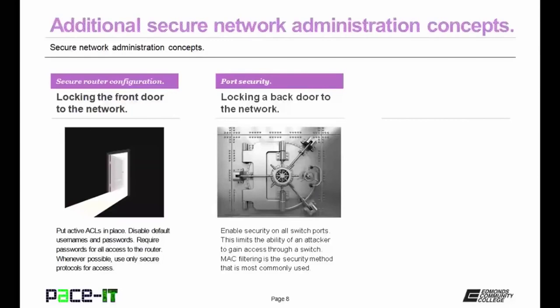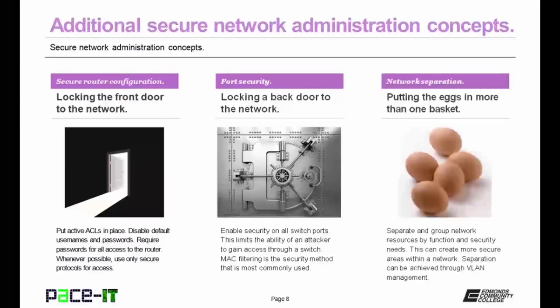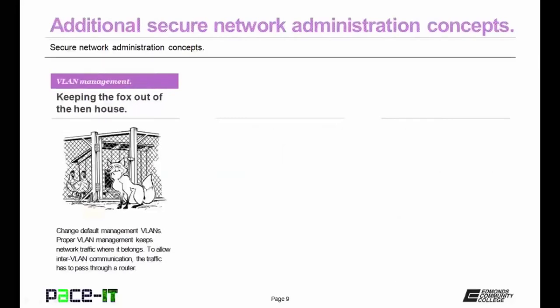Then there's port security on switches—locking a back door to the network. Enable security on all switch ports, which limits the ability of an attacker to gain access through an open switch port. MAC filtering is the security method most commonly used to secure switch ports. Then there's network separation: separate and group network resources by function and security needs to create more secure areas within a network. Network separation can be achieved through VLAN and VLAN management. Proper VLAN management keeps network traffic where it belongs, and to allow inter-VLAN communication, traffic must pass through a router.